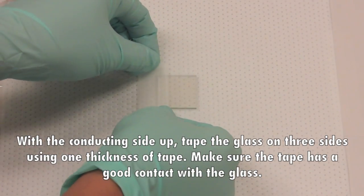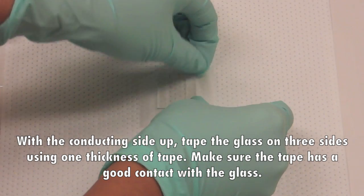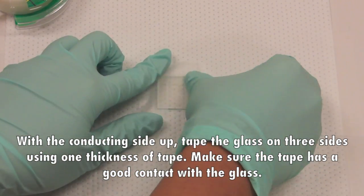With the conductive side up, tape the glass on three sides using one thickness of tape. Make sure the tape has good contact with the glass.